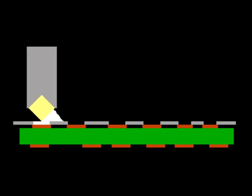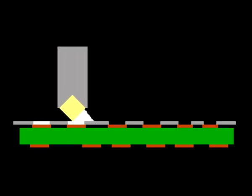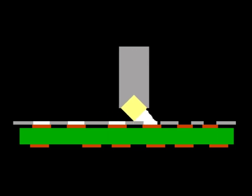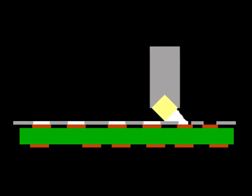Solder paste may be applied to the printed circuit board by dispensing or stencil printing. A sixth-thou or eighth-thou metal stencil is aligned with the surface mount pads and the solder paste is forced through the apertures using a squeegee blade.